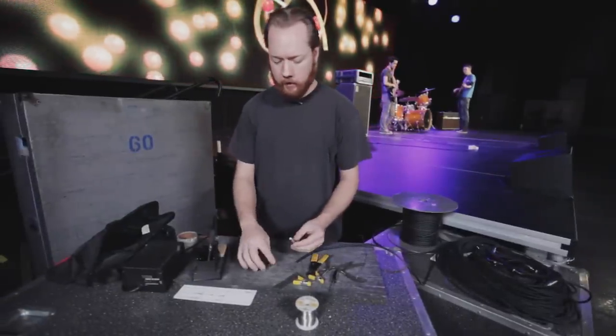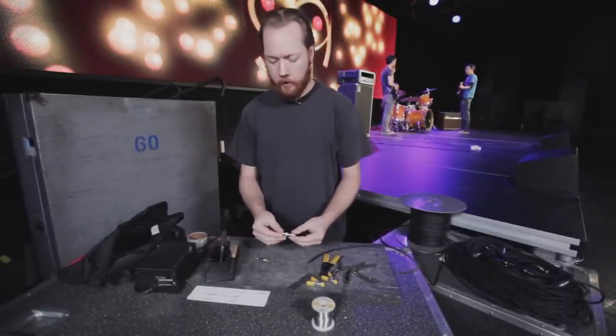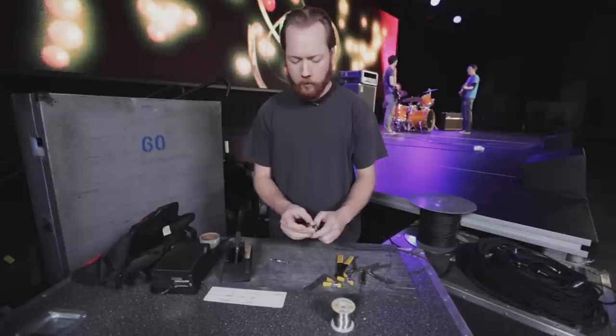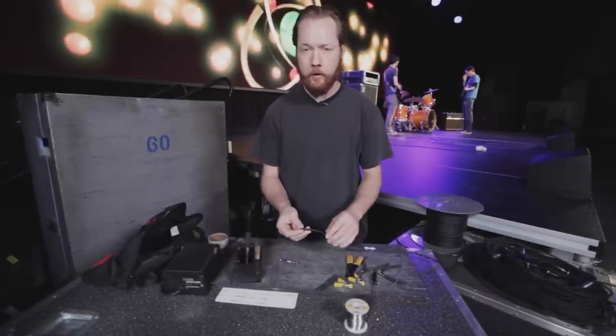First, take the shell and any insulator that may be involved and place it onto the cable. You won't be able to put this on the cable later once the connector has been soldered in place.